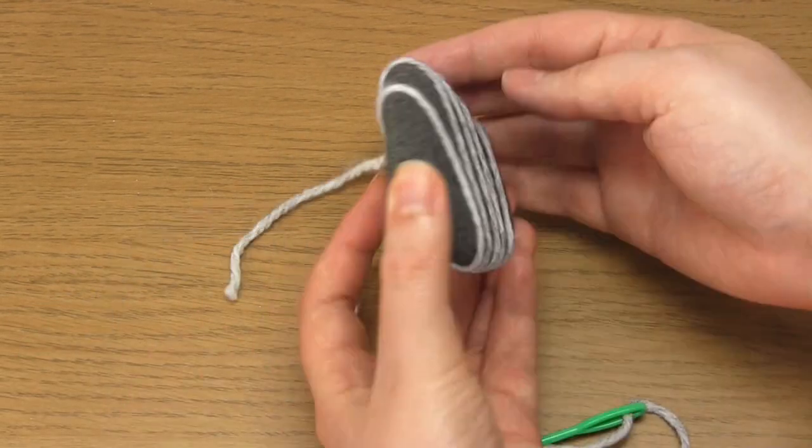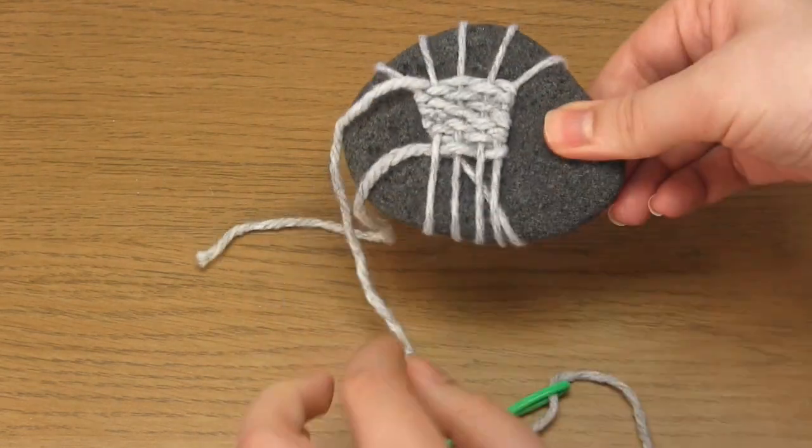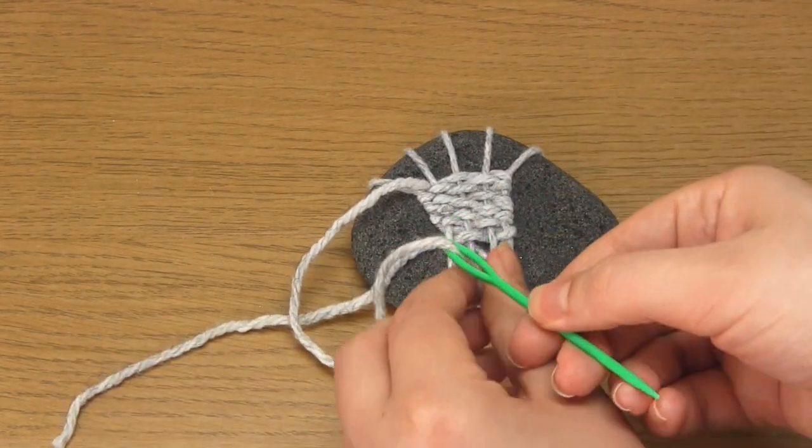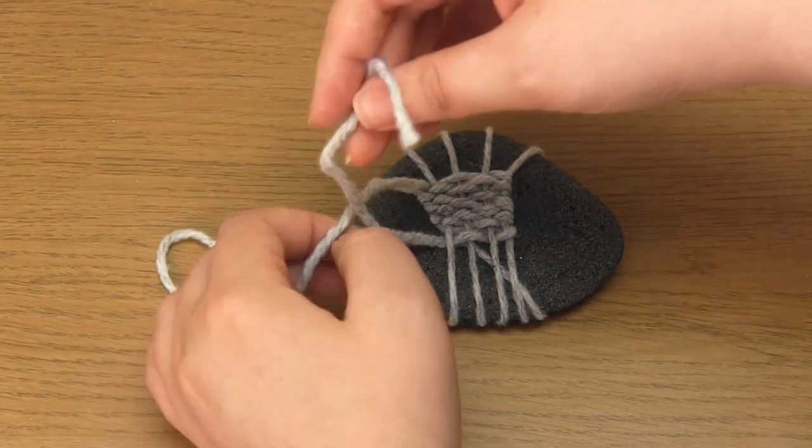Then once you've checked your strands are all where you want them, evenly spaced and under tension, you need to double knot the two yarn tails together.